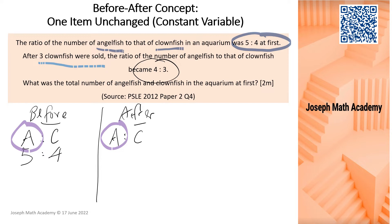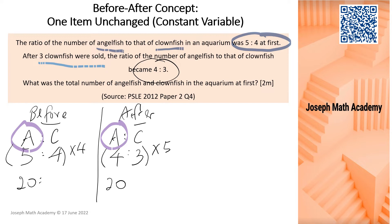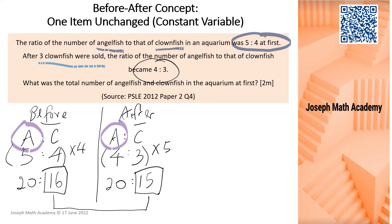The new ratio after selling is 4 to 3. To make the angelfish units equal (constant) in both ratios, we find the common multiple of 5 and 4, which is 20. The first ratio is multiplied by 4 to get 20:16, and the second ratio is multiplied by 5 to get 20:15. From here we can see there is a drop of 1 unit in clownfish.